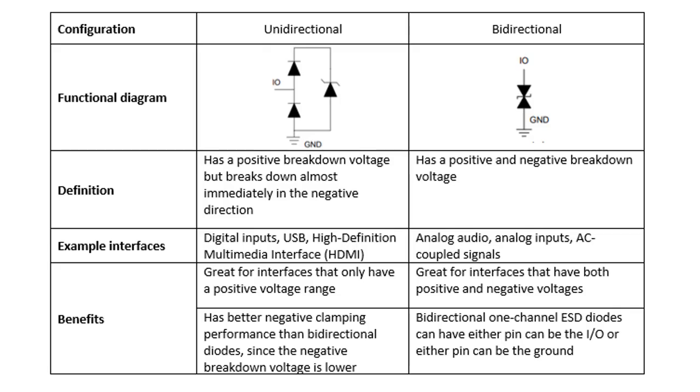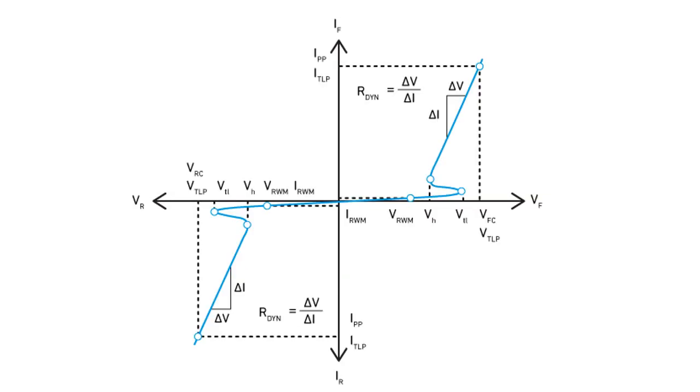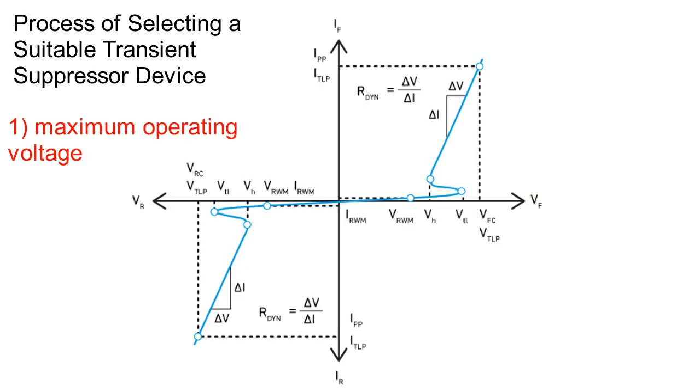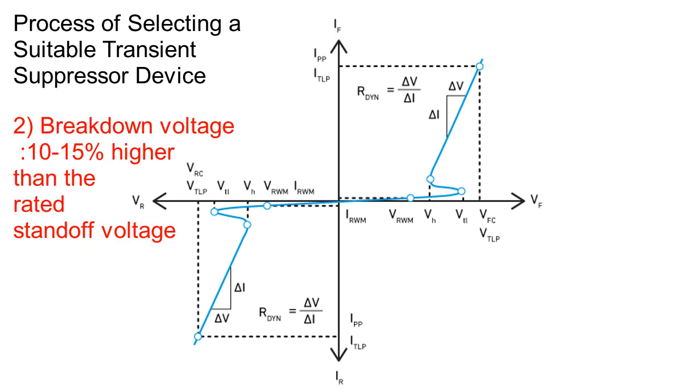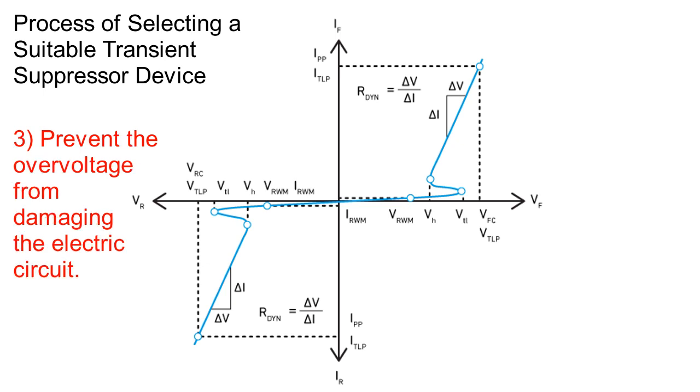The process of selecting a suitable transient suppressor device: The maximum operating voltage that you have determined will then be used in establishing the suitable rated standoff voltage selection when choosing the TVS diode. Next, you will need to choose the TVS component by establishing the breakdown voltage of the device. This voltage should be at least 10-15% higher than the rated standoff voltage. Lastly, you will need to choose the TVS component by establishing the maximum clamping voltage of the device when subjected to high voltage pulse conditions.